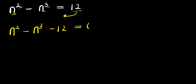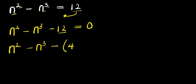And this equals 0. So from here, we can have n power 2 minus n power 3 minus 12 here. I can express the 12 as 4 plus 8 — 4 plus 8 is 12 — so we have equals 0.